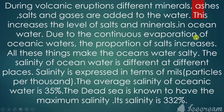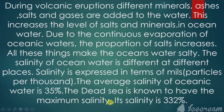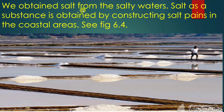Due to the continuous evaporation of oceanic water, the proportion of salt increases, and all these things make the ocean water salty. The salinity of ocean water is different at different places. Salinity is expressed in terms of parts per thousand. The average salinity of oceanic water is 35 percent. The Dead Sea is known to have the maximum salinity, 332 percent more than the oceanic water. We obtain salt from salty waters.